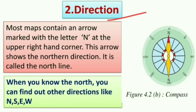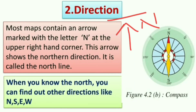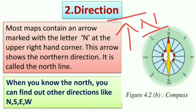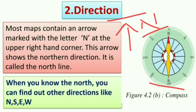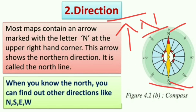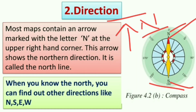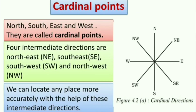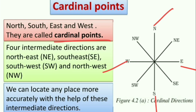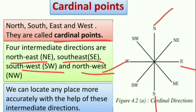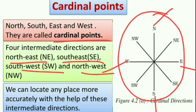The second component of a map is direction. On maps we can see an arrow marked with the letter N at the top right corner, which indicates north direction — we call it the north line. Using a compass marked with north and south, if we know one direction — north — we can find the other directions: south, east, and west. North, east, south, and west are called cardinal points. Along with these, there are four intermediate directions: north-east, south-east, south-west, and north-west, which help us locate any place more accurately.